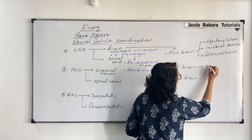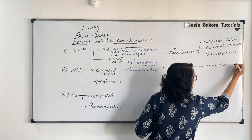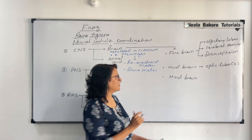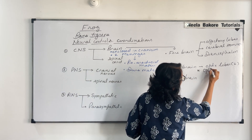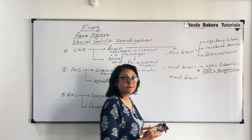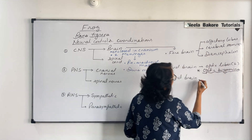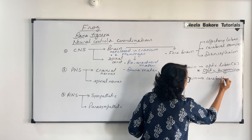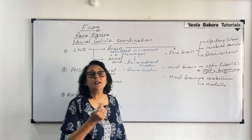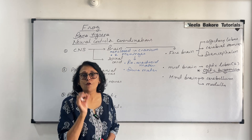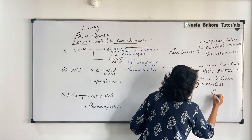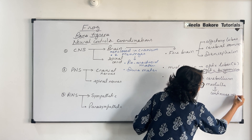The midbrain has only optic lobes, and this is a pair — only two. In mammals we have optic quadrigemina, which is a mammalian character. In frogs we say they have optic bigemina — only two lobes. The hindbrain has two parts: cerebellum and medulla. This medulla continues with the spinal cord, emerging from the opening in the skull called the foramen magnum.